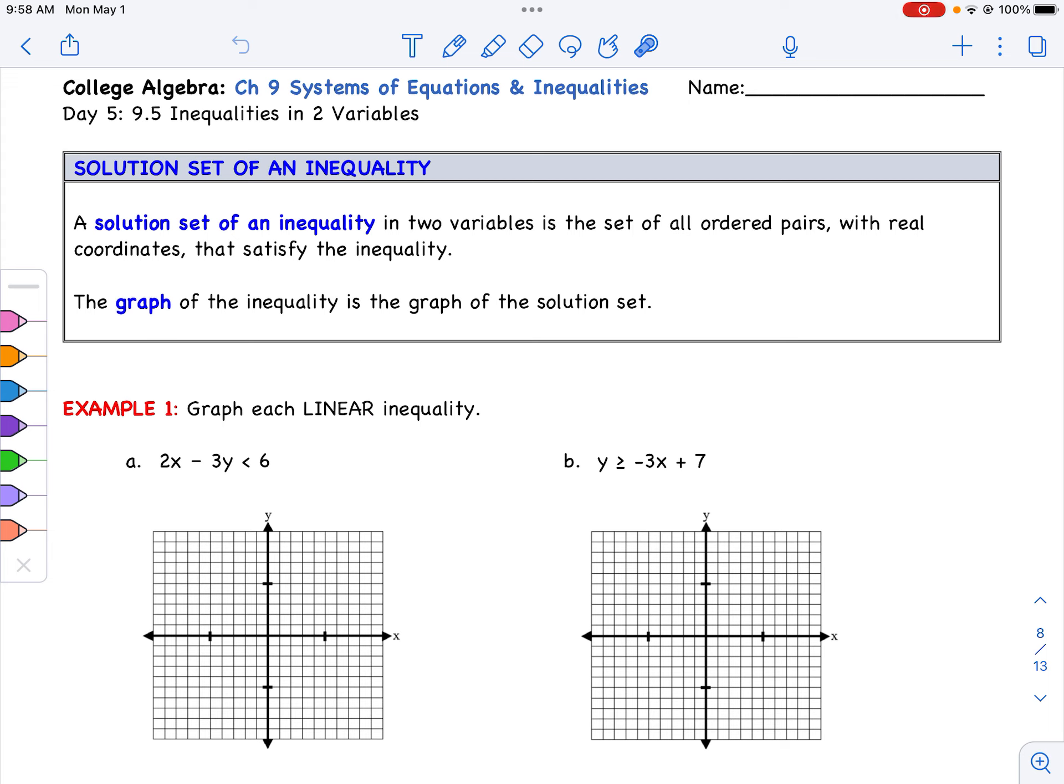First thing I want to notice when we look at this 2x minus 3y less than 6, I notice this less than symbol. Right away, that less than symbol shows me I'm going to have a dashed line. Versus for part b, when I see the greater than or equal to, I know it's going to be a solid line. I like to get that out of the way right away. Now the next part is just graphing the line. When you're in standard form, you could solve for y equals, but what I'm going to show today is using your intercepts.